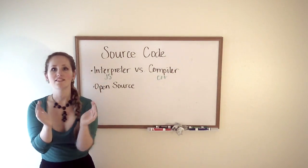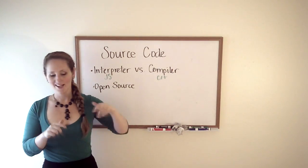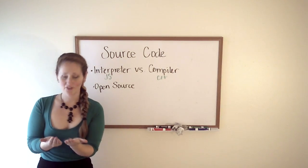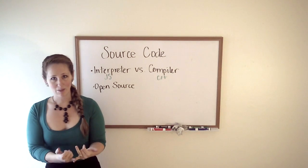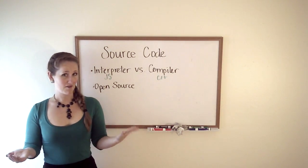Source code itself is the actual text document that a programmer creates. They type it up, it's letters, it's numbers, it's symbols. If you give that to somebody and have them look at that on their computer, that's not going to run their email, that's not going to be a web browser, that's just a text document, really.